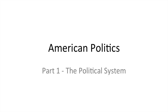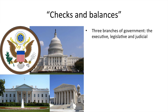The American political system. Let's start with checks and balances, which is really the phrase Americans use to describe the three branches of government — the separation of government power: the executive, the legislative, and the judicial. This system with three branches exists both for federal government and state government.